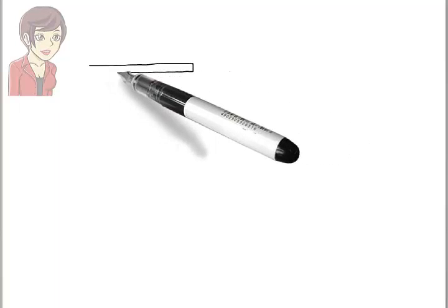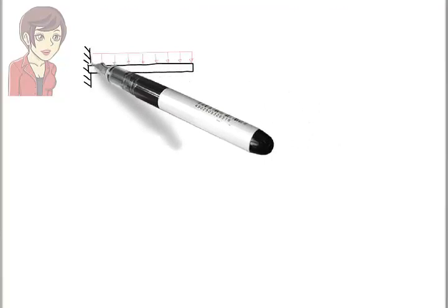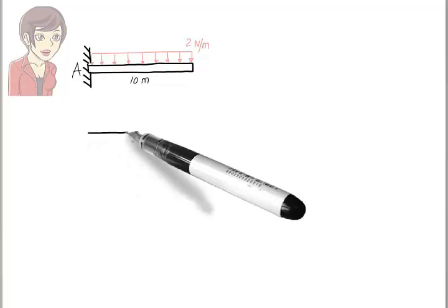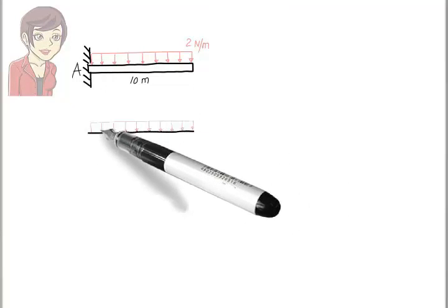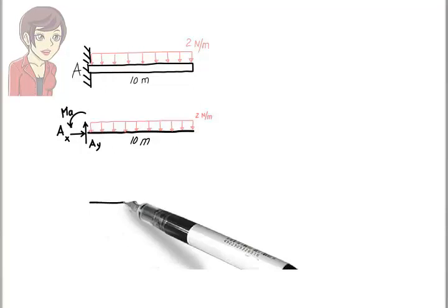Before we end this session, let's look at two more examples. Here, we have a cantilever beam subjected to a uniformly distributed load. Let's analyze the beam. First, we draw the free body diagram for the beam. For the purpose of finding the support reactions, we can replace the uniformly distributed load with its equivalent concentrated load.